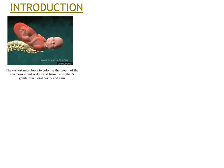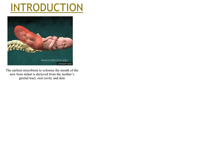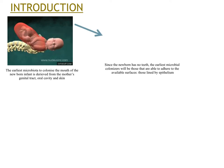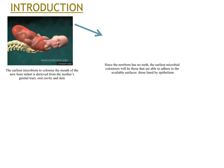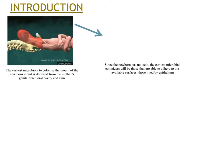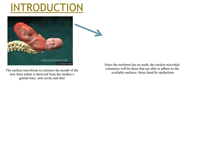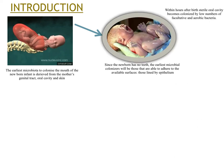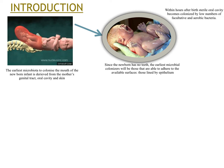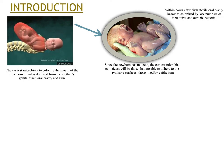The earliest microbiota to colonize the mouth of the newborn infant is derived from the mother's genital tract, oral cavity, and skin. Since the newborn has no teeth, the earliest microbial colonizers will be those able to adhere to available surfaces — those lined by epithelium. Within hours after birth, the sterile oral cavity becomes colonized by low numbers of facultative and aerobic bacteria.